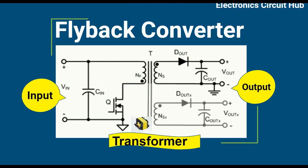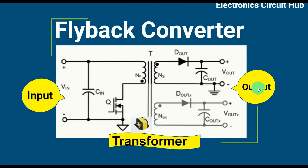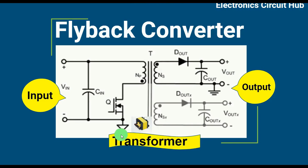Let us get started. This is the basic schematic of flyback converter or flyback topology. You can see here we have input, we have output, and in between there is what is called a coupled inductor or transformer. This is also called a flyback transformer. On the input side you can see what is called a raw DC capacitor or bulk capacitor.